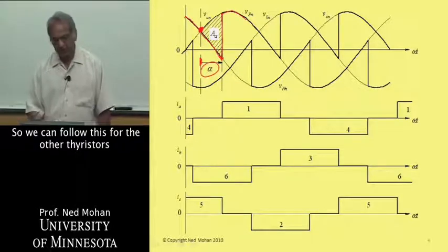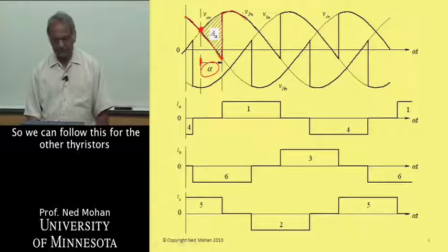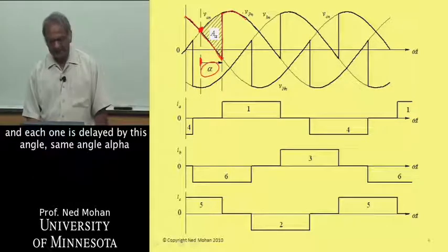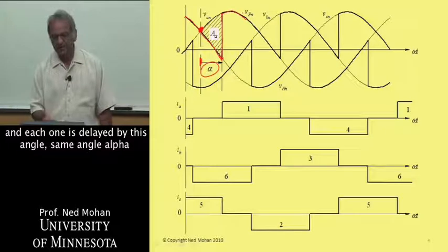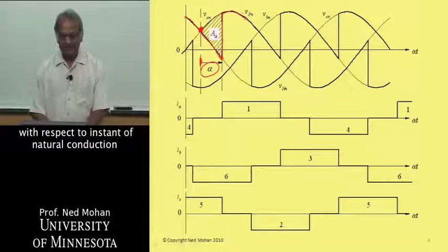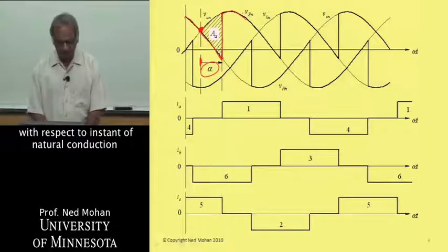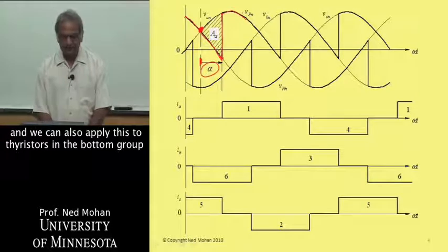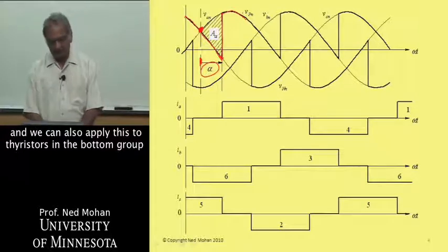We can follow this for the other thyristors. And each one is delayed by this angle, same angle alpha with respect to its instant of natural conduction. And we can also apply this to thyristors in the bottom group.